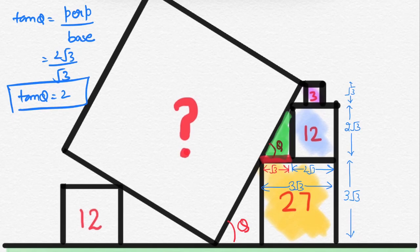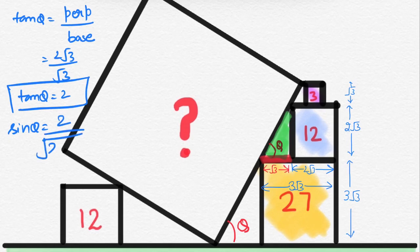So, here tan theta is 2. So, sin theta will be 2 over square root of 2 square plus 1 square and this equals to 2 over root 5.